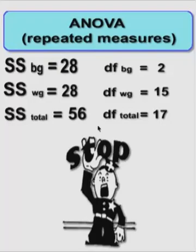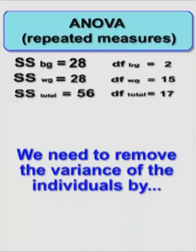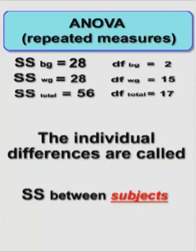This is where we need to stop. Now we have to make some changes. Because this is a repeated measures ANOVA, this is what we're going to have to do. We need to remove the variance of the individuals. And how we do that is we subtract the individual differences from the denominator of the F-ratio. So let's go ahead and do these.